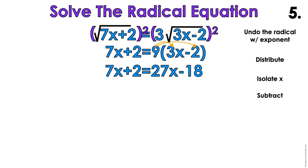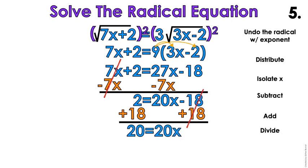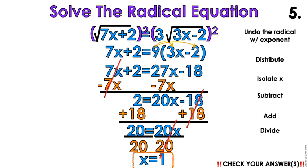So I'm gonna distribute. When I distribute, I am going to isolate x. So I'm gonna subtract 7x. And then we're gonna add 18 to both sides. Divide by 20. We're gonna get x equals 1. Make sure you check your answers.